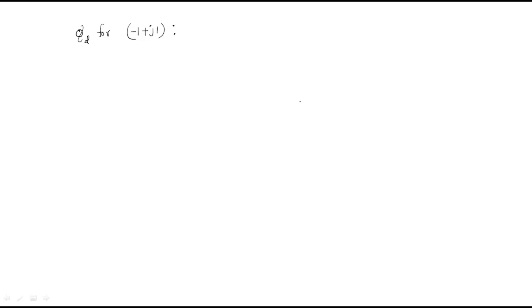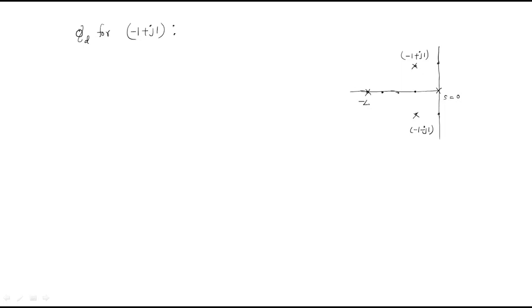To understand this, we redraw the given s-plane. We have one pole at s equal to 0, two complex poles at minus 1 plus j1 and minus 1 minus j1, and another pole at minus 4.